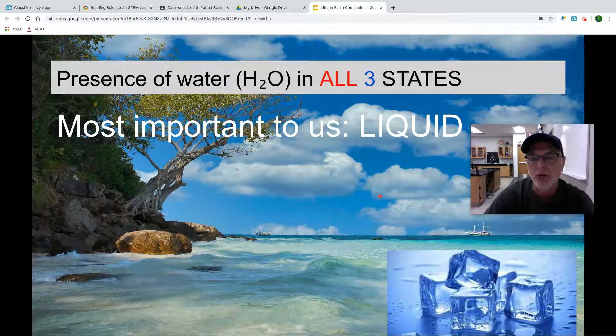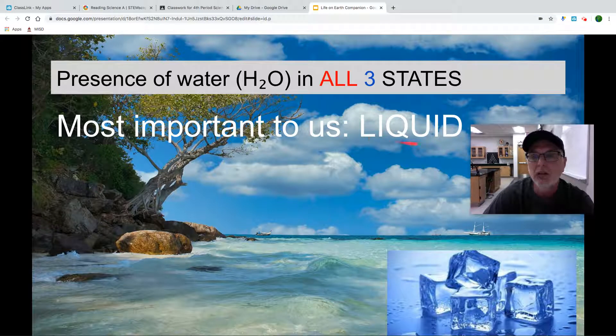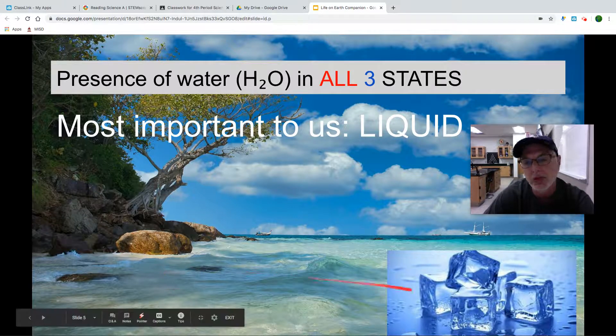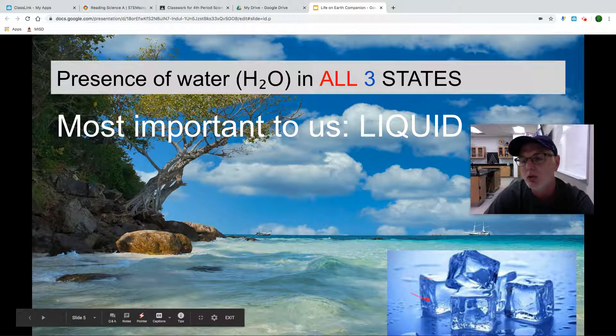water exists in all three states: water vapor, which is the gaseous state in our atmosphere, liquid water which you see here, and then we've got ice, which is the solid version.